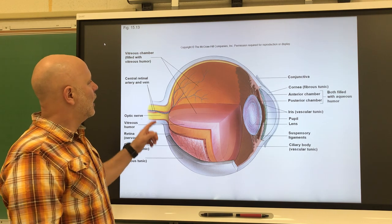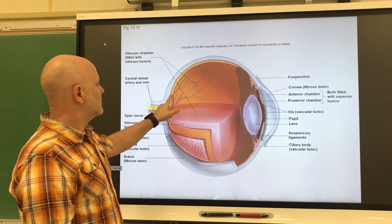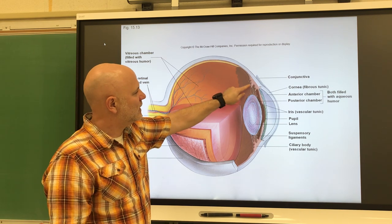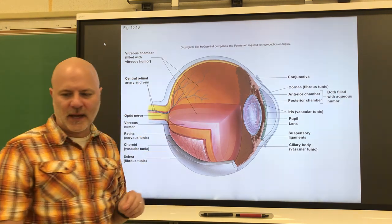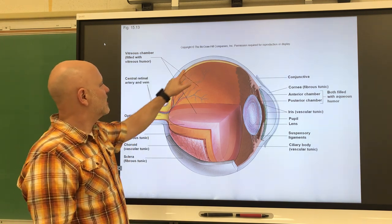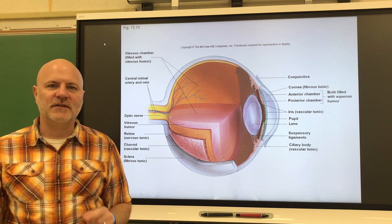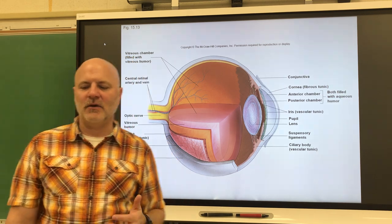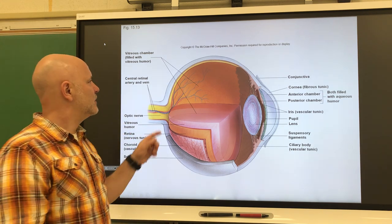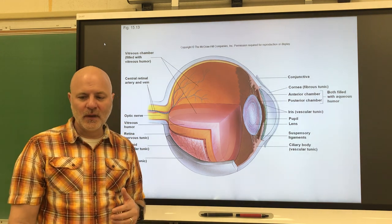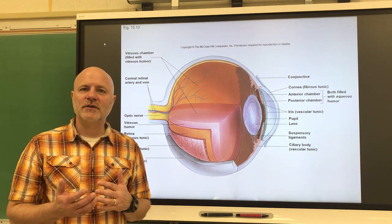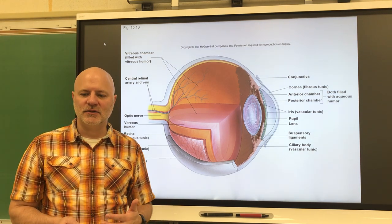Underneath the fibrous tunic is the vascular tunic. In the back part of the eye, that is the choroid — a vascular, pigmented middle layer of the wall of the eye with many blood vessels, loosely joined to the sclera. It also has melanocytes that produce melanin, which absorbs excess light that gets into the eye.